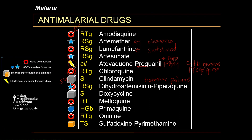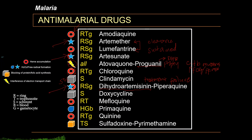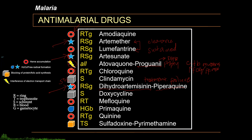Dihydroartemisinin-piperaquine combination drug is used in the treatment of uncomplicated or even severe malaria. The dihydroartemisinin here is the actual active metabolite of the other artemisinin drugs mentioned earlier — it is responsible for free radical accumulation, which is toxic to the parasite. Piperaquine is converted to its active form, accumulates in the food vacuole, and inhibits heme detoxification, similar to amodiaquine and lumefantrine. This combination is effective against the ring stage, early schizont stage, and has some activity on gametocytes. It is generally well tolerated, used with caution in patients with QT prolongation, and is reserved against chloroquine-resistant infections.